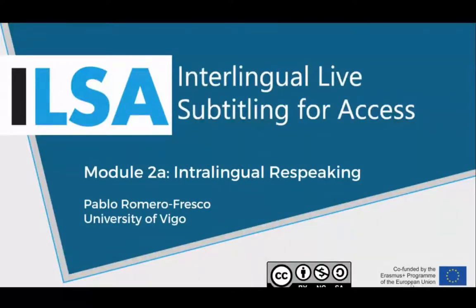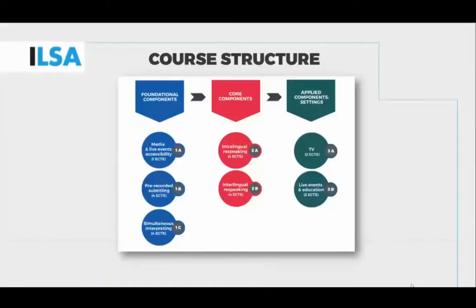This is Module 2a on interlingual re-speaking, which you can find in the course structure map. It's the first of the core components. When I say it's not the most important, it is obviously important as a core component, but it's still dealing with the intralingual process of re-speaking before we move on to interlingual re-speaking.